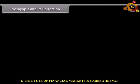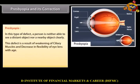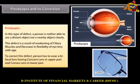Presbyopia and its correction. In this type of defect, a person is neither able to see a distant object nor a nearby object clearly. This defect is a result of weakening of ciliary muscles and decrease in flexibility of the eye lens with age. A person has to wear a bifocal lens having a concave lens in the upper part and a convex lens in the lower part.